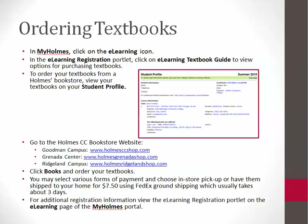You will want to check out the options for purchasing your textbooks by logging into myHolmes, clicking on the eLearning icon, and clicking on the eLearning textbook guide in the eLearning registration portlet. To order your textbooks from a Holmes bookstore, view your textbooks on your student profile, go to one of the Holmes CC bookstore websites, and click Books to order. You may select various forms of payment and choose in-store pickup or have them shipped to your home for $7.50 using FedEx ground shipping, which usually takes about three days.